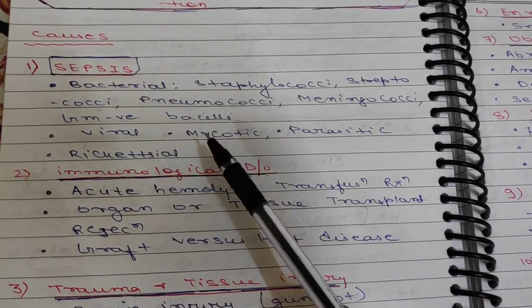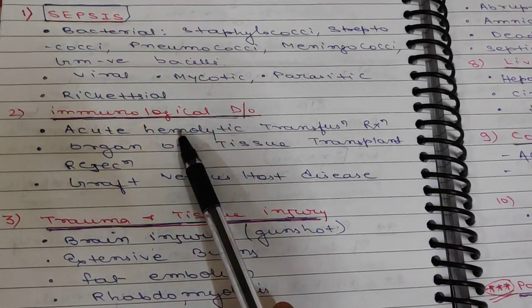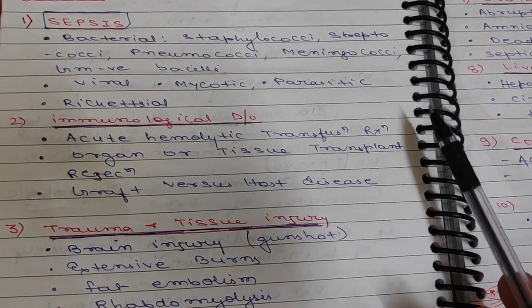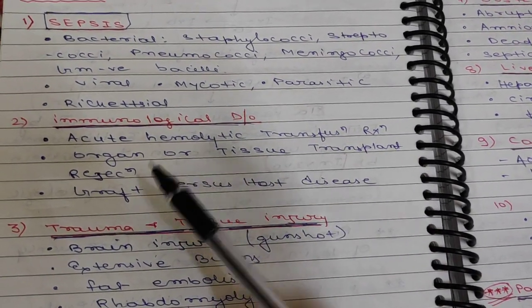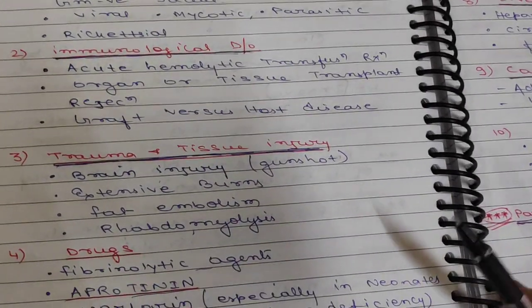Immunological disorders may lead to DIC, including acute hemolytic transfusion reaction, organ or tissue transplant rejection, or graft versus host disease. The third cause is trauma and tissue injury, which may include brain injury, extensive bone fractures, fat embolism, and rhabdomyolysis.